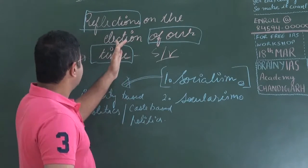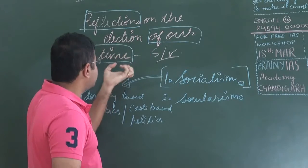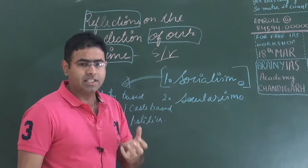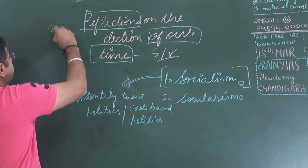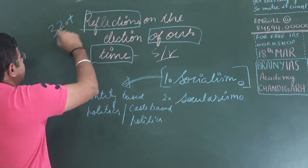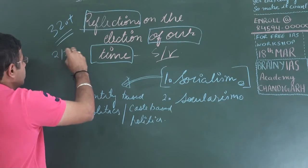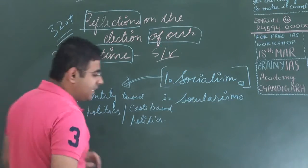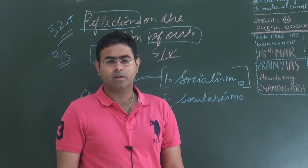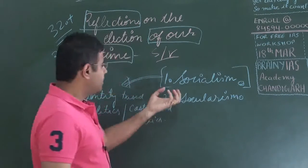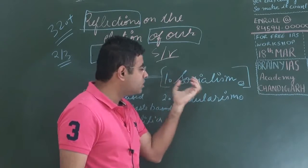But recently what we have seen is the stupendous performance by the BJP, 320 plus seats. They have more than two thirds of the majority in the legislative assembly of Uttar Pradesh. So they have given a new meaning to this word socialism.